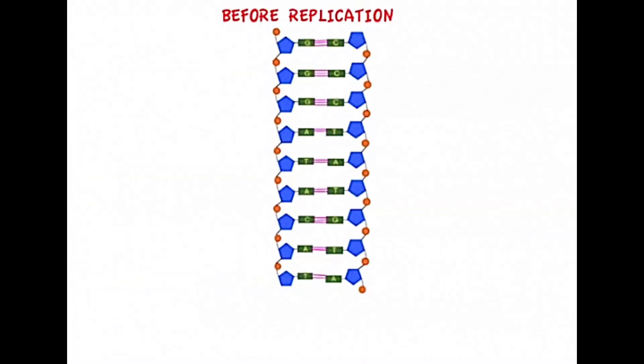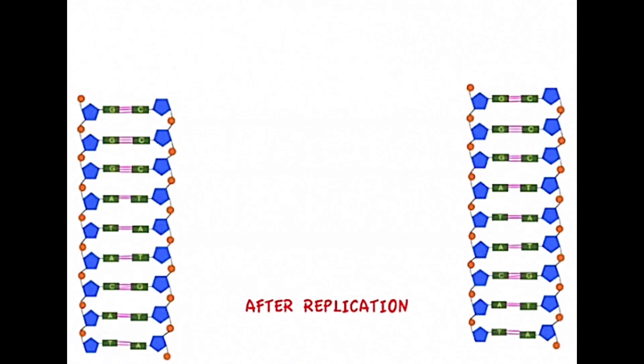DNA replication is the process by which one DNA molecule is duplicated to make two identical DNA molecules so that the next generation of cells can contain the same genetic information.